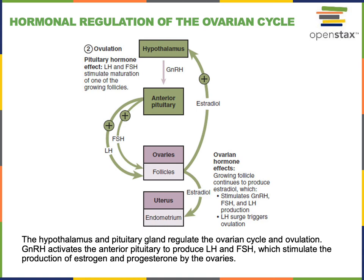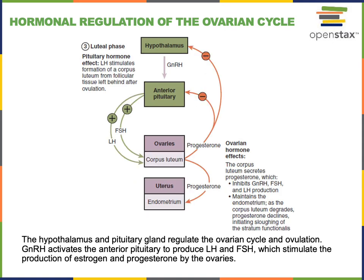The immature egg cell will then travel through the oviduct, also known as the fallopian tube or uterine tube. Following ovulation, the remnant of the ovarian follicle is called the corpus luteum, and the corpus luteum produces the steroid hormone progesterone in response to luteinizing hormone. This is where the name luteinizing hormone comes from — LH stimulates ovulation, leading to the production of the corpus luteum.